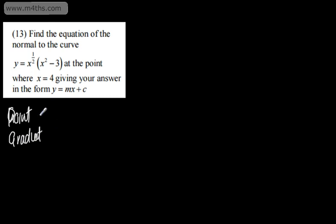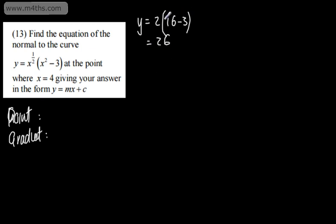We're asked to find the equation of the normal to the curve y = x to the half multiplied by (x² - 3) at the point where x = 4, giving the answer in the form y = mx + c. We need a point and a gradient; it's a normal so we'll need the negative reciprocal. When x = 4: square root of 4 is 2, times (16 minus 3) gives y = 26. So the point is (4, 26).